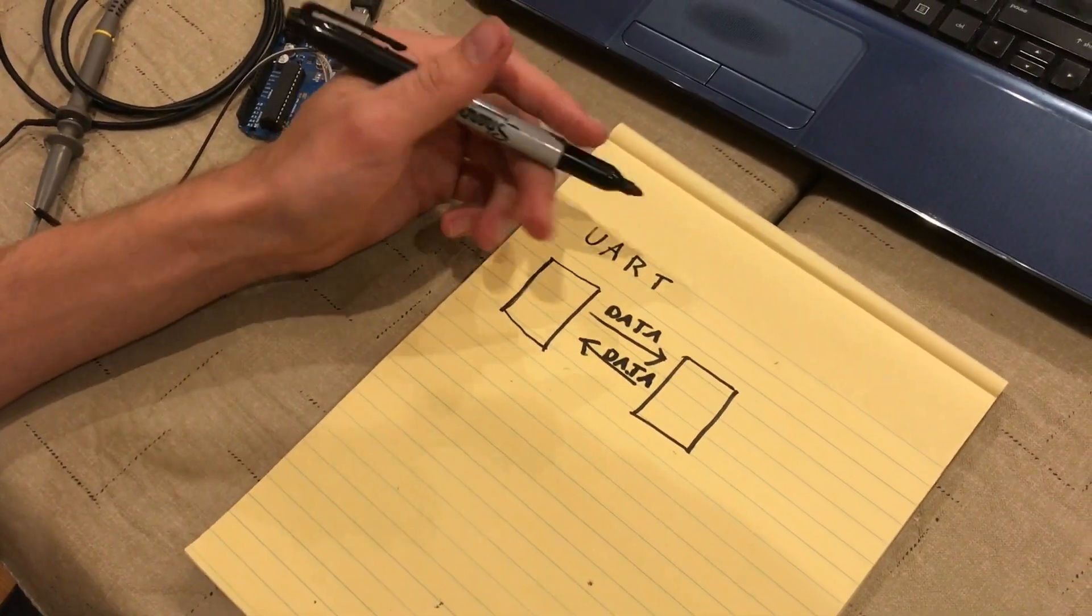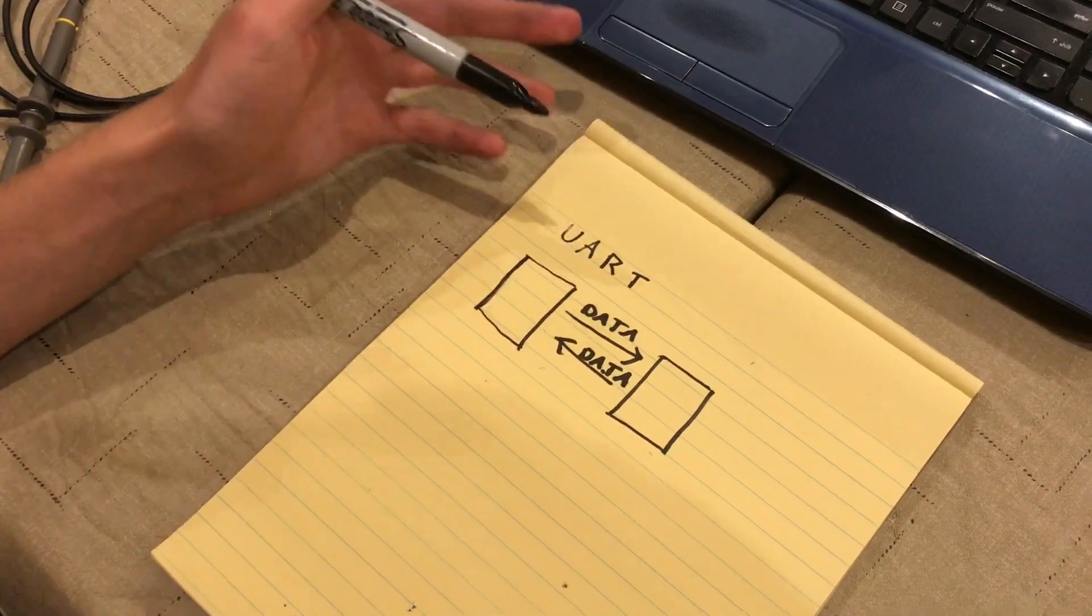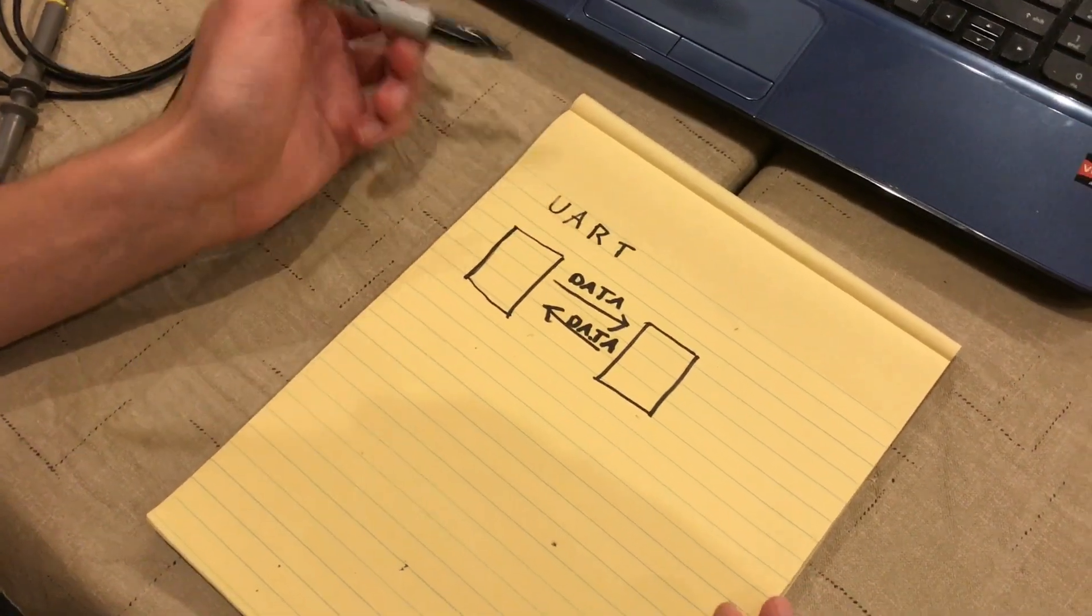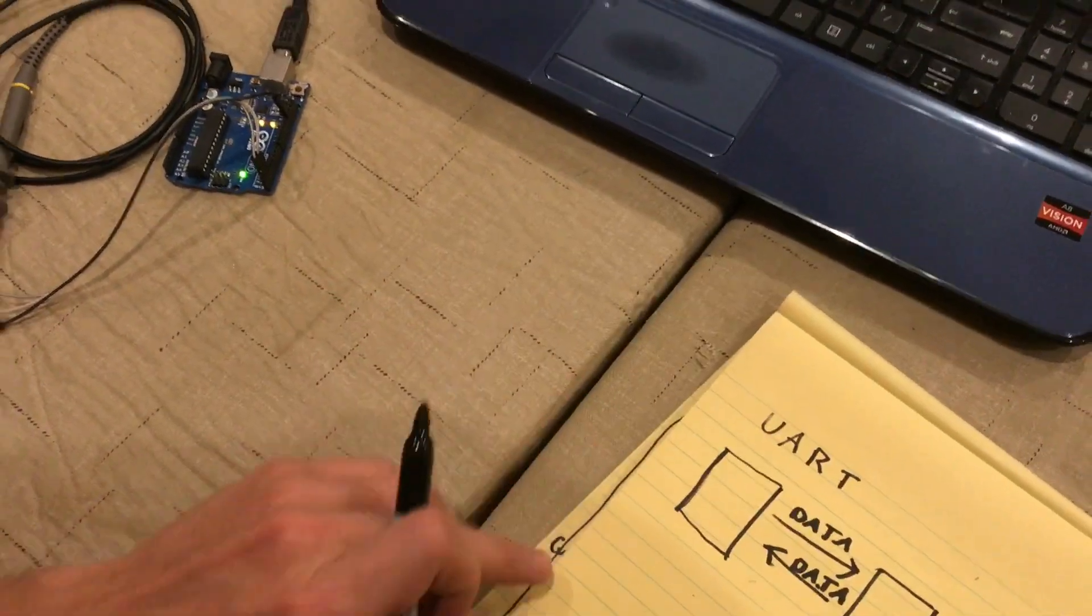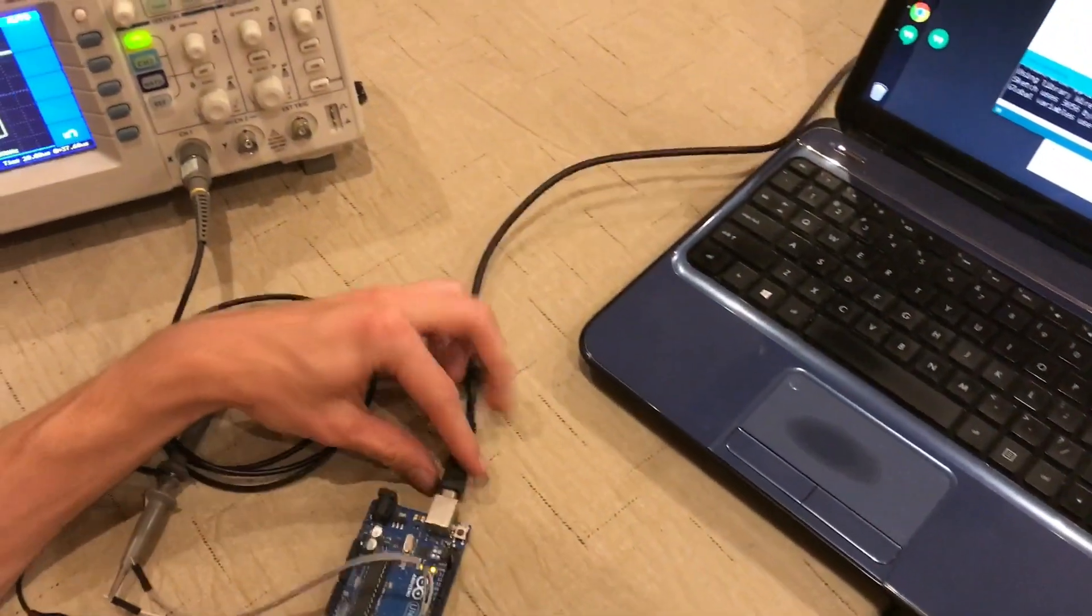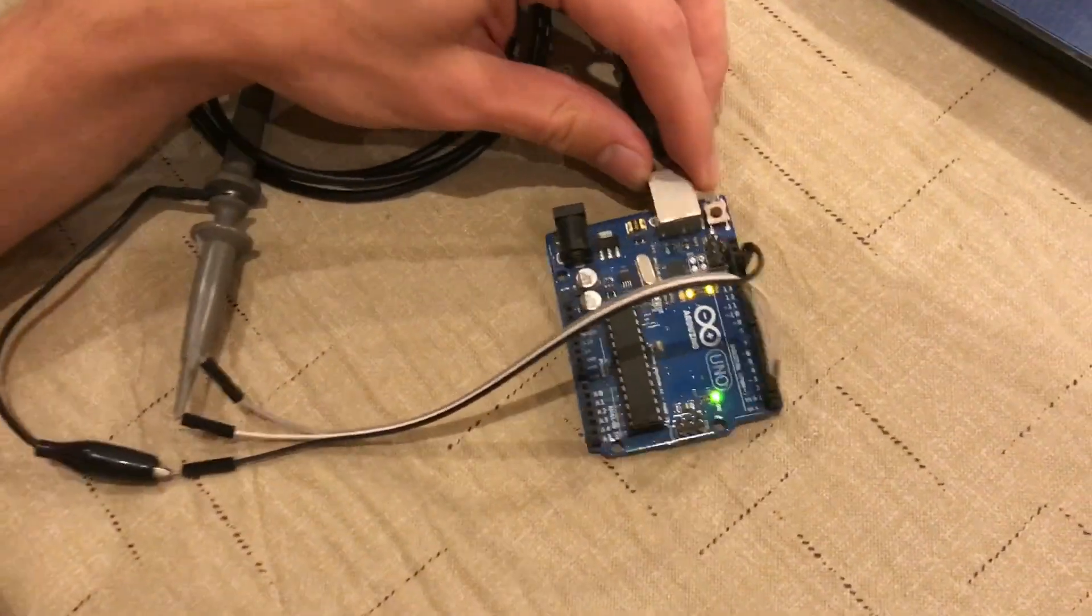And this is done over wires, so it's important to know UART is not like Wi-Fi. You don't send it over the air. Specifically, here I have an Arduino Uno that I'm using for this demonstration.